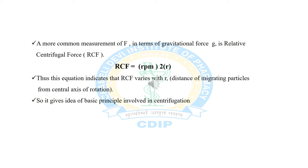Another important concept in the principle of centrifugation is relative centrifugal force (RCF). RCF is the common measurement of centrifugal force in terms of gravitational force. The equation RCF = rpm² × r indicates that RCF varies with the r value, where r is the distance of migrating particles from the central axis of rotation.